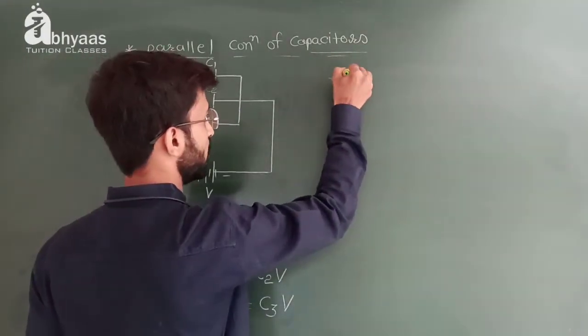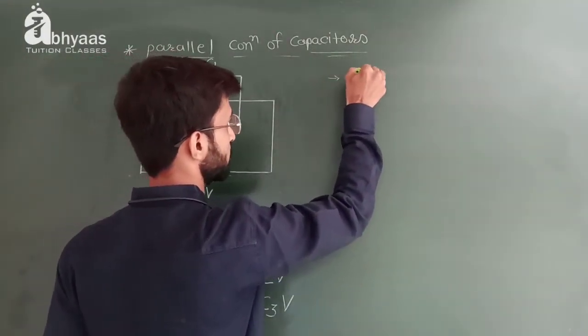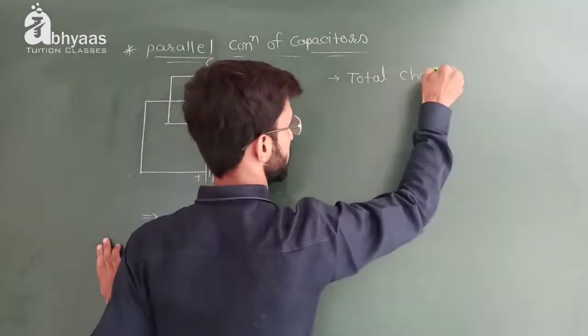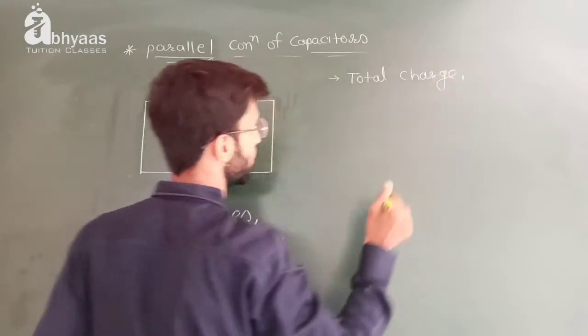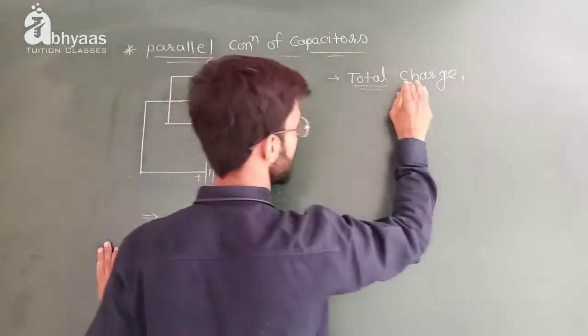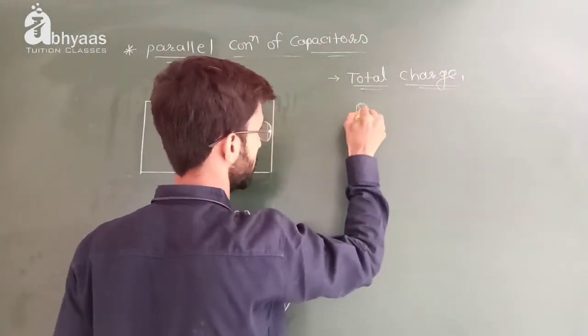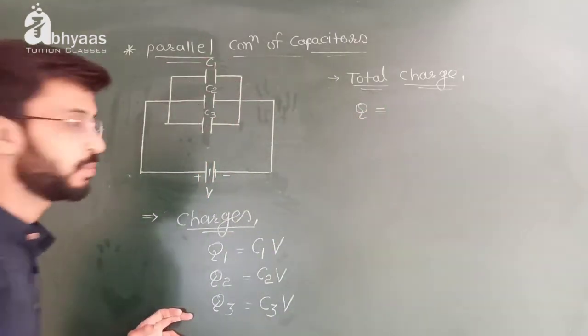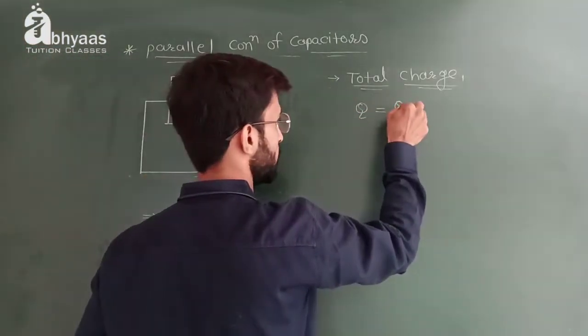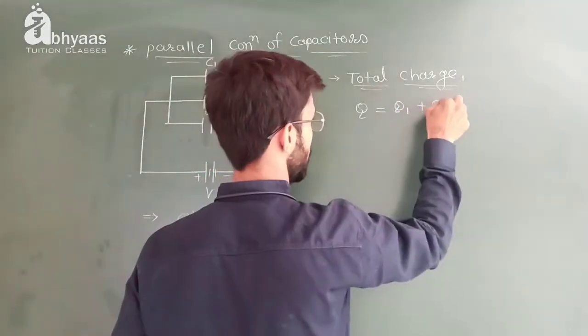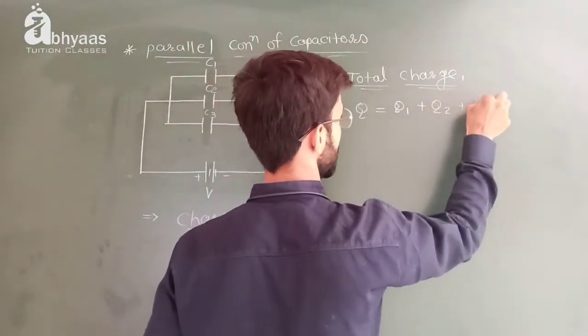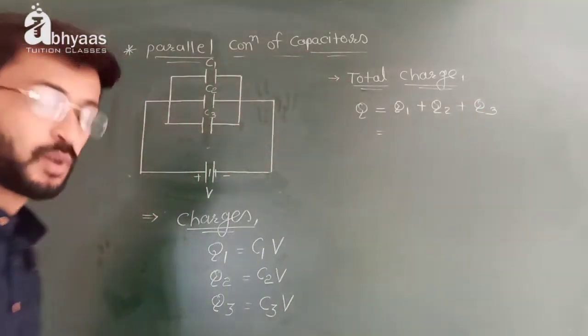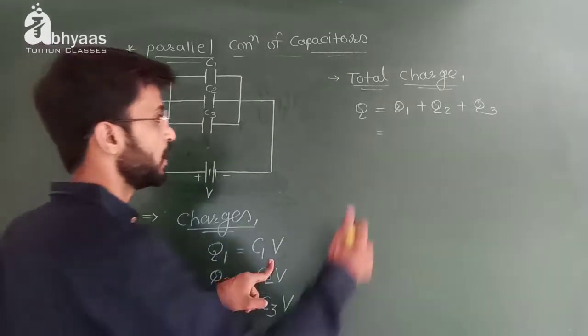Now the total charge is given by Q = Q1 plus Q2 plus Q3. Q1 ki value kya hai? C1 into V, Q2 ki value C2 into V plus C3 into V.